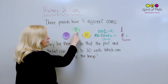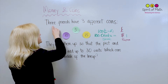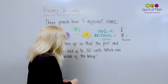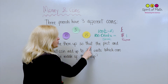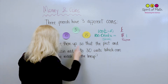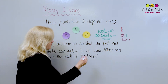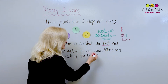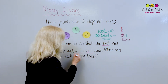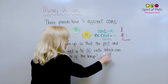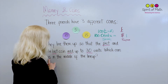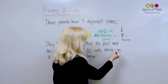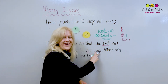In this question you just have three coins. It says three friends have three different coins and they line them up so that the first and the last coin add up to 30 cents. Which coin is in the middle of the lineup? Let's talk about this a little bit, because it is in cents, and it says the first and the last add up to 30 cents.